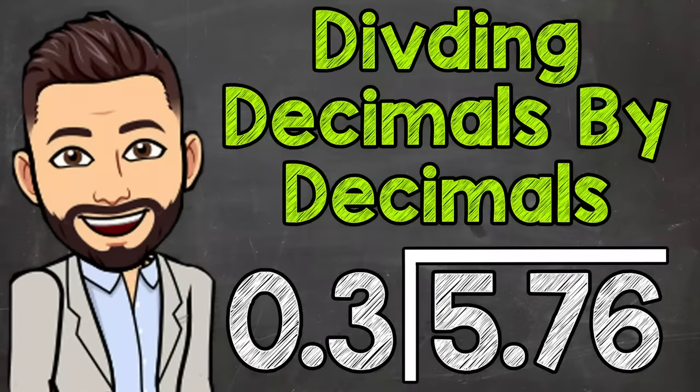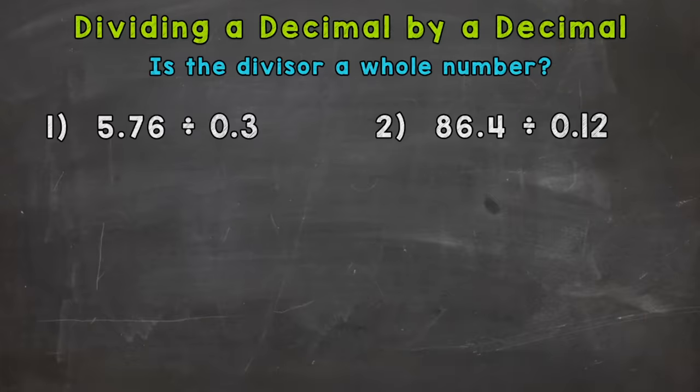Welcome to Math with Mr. J. In this video I'm going to cover how to divide a decimal by a decimal. For number one we have five and seventy-six hundredths divided by three tenths.